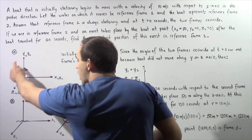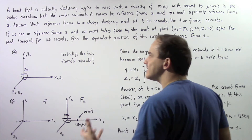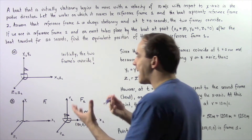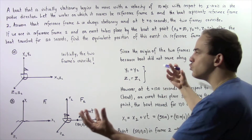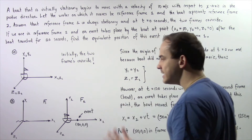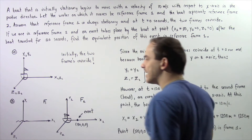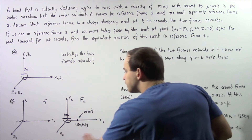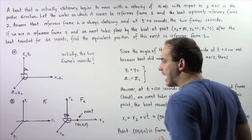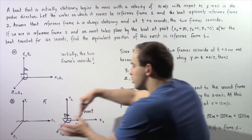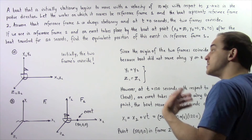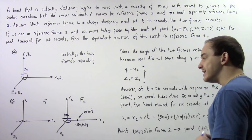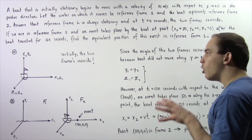So x1, y1, and z1 are the axes of frame one, and x2, y2, and z2 are the axes of frame number two, and they coincide. Moving on to diagram B: after 120 seconds has passed, the boat — frame number two, F2 — has traveled to the right along the x-axis because it has a velocity of 10 meters per second.